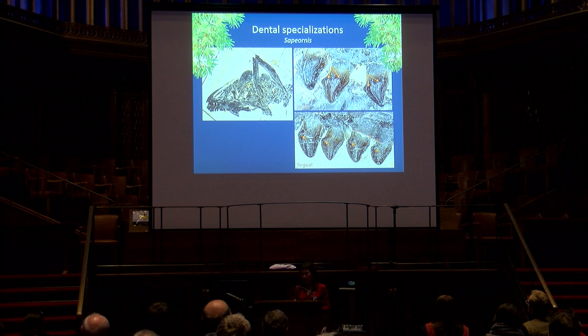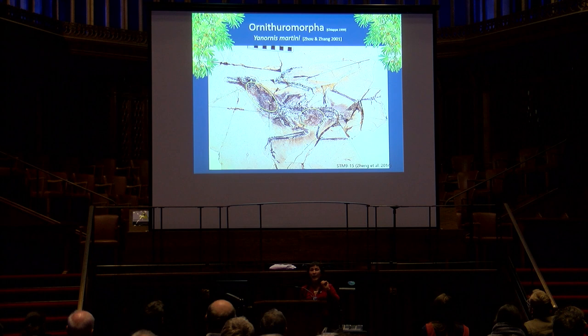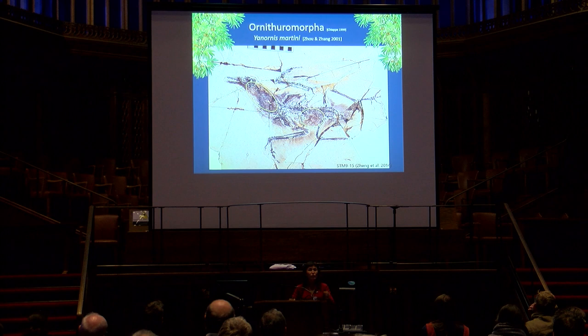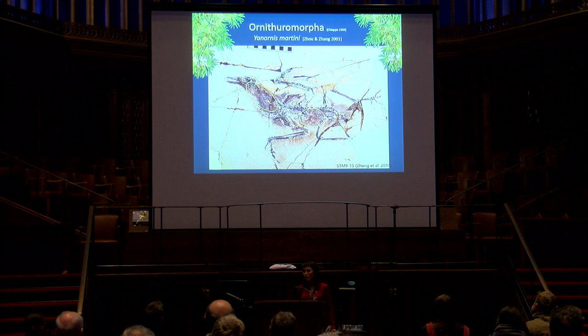Within the ornithuromorphs, despite this clade being represented by far fewer specimens than Confuciusornithormes or enantiornithines — perhaps only about 200 specimens scattered across China — seven of 18 known species preserve evidence of diet. For example, about a dozen specimens of Yanornis, roughly half of all known specimens of this taxon, preserve direct evidence that it was a piscivore. We have whole fish inside the esophagus, pellets about to be ejected, and macerated fish remains in the ventriculus. This is the earliest strong evidence of bidirectional peristalsis within the Maniraptorans.